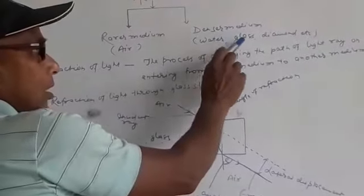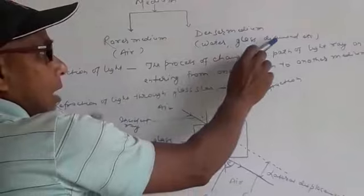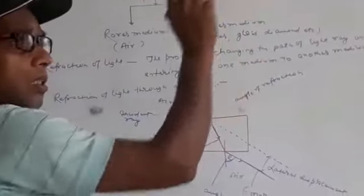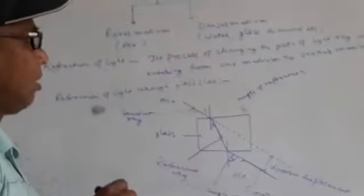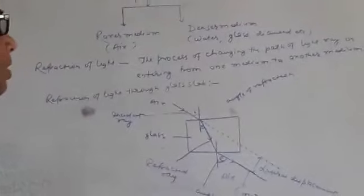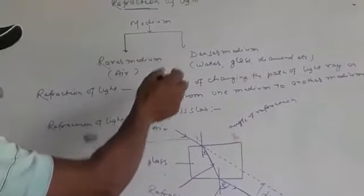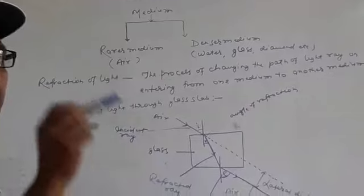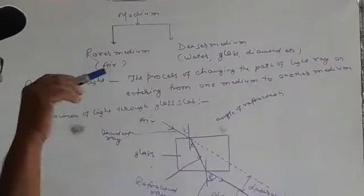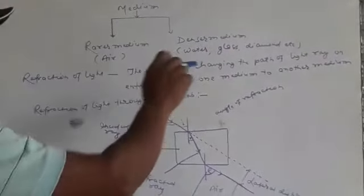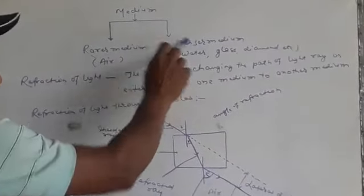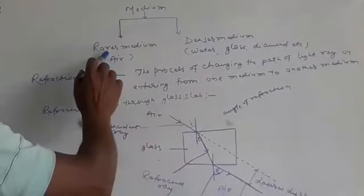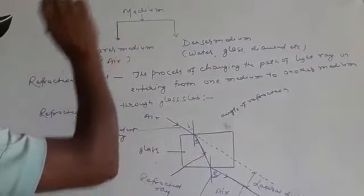Water, glass, diamond — these are examples of denser medium. So, how to classify medium? On the basis of speed of light: if speed is less, that is denser medium; if speed is more, that is rarer medium.